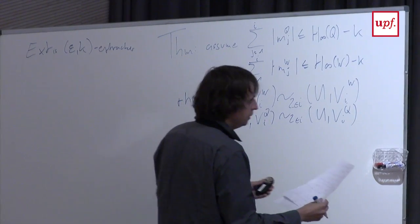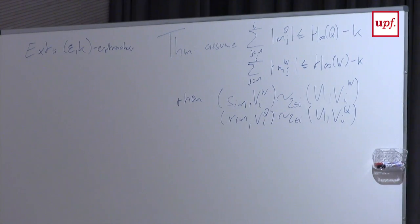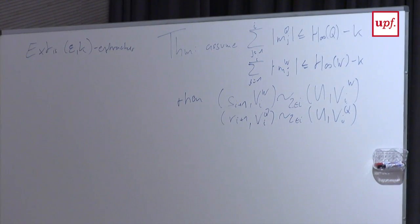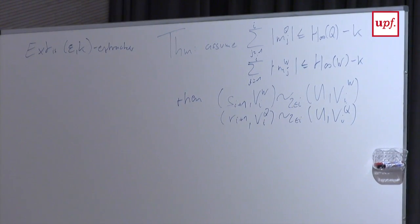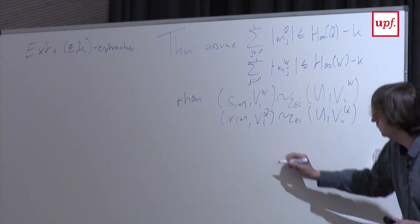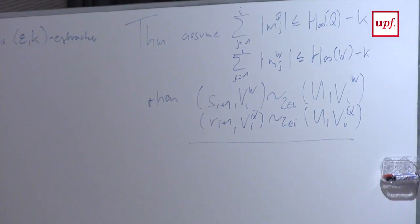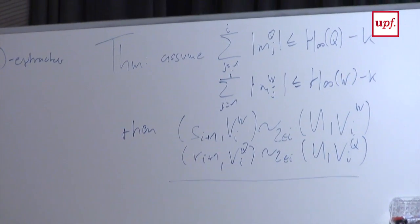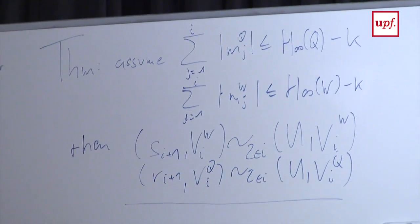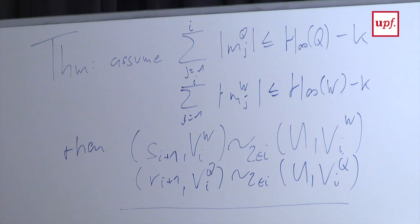That's the theorem. How do we prove it? I will prove it by induction. I will assume that S_{i+1} is delta-close to uniform given the view of Wendy, and show that this implies the next R_i will be close to uniform — where close means delta plus epsilon.